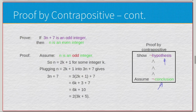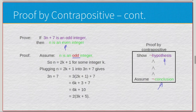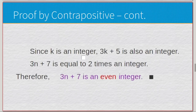For example: if 3n + 7 is an odd integer, then n is an even integer. Under proof by contrapositive, we assume the opposite — that n is odd — so we use n equals 2k plus 1. Plugging n = 2k+1 into 3n + 7 gives 3(2k+1) + 7. With some algebra: 6k + 3 + 7 = 6k + 10, which factors to 2(3k + 5). Since k is an integer, 3k + 5 is also an integer, therefore 3n + 7 equals 2 times an integer, so 3n + 7 must be even.